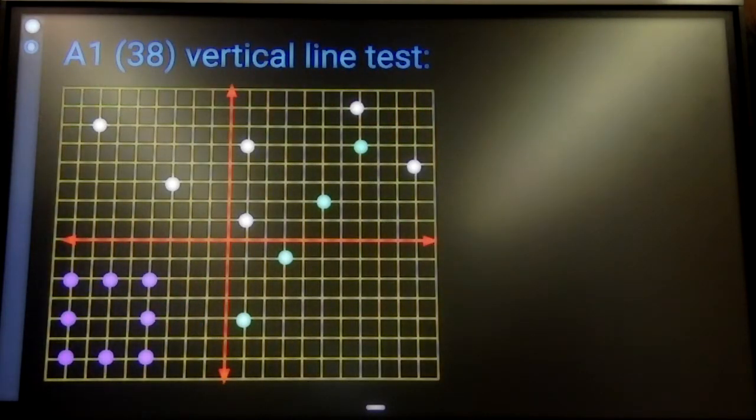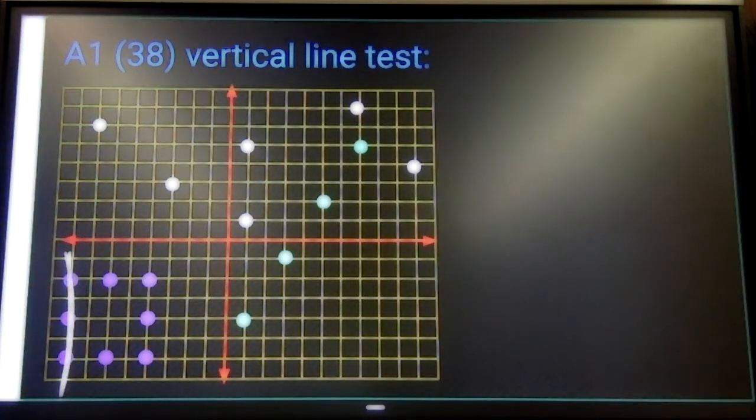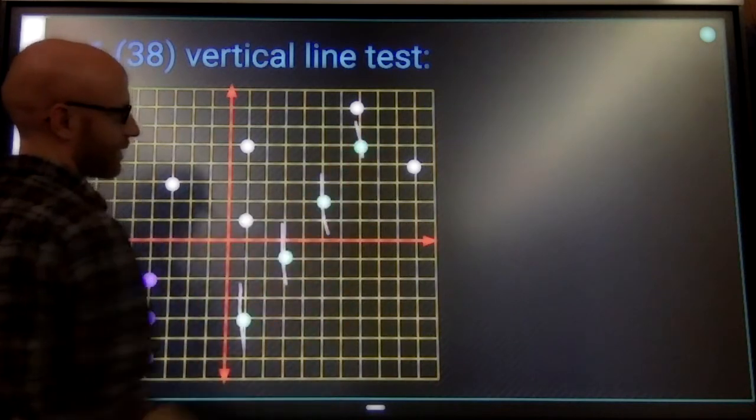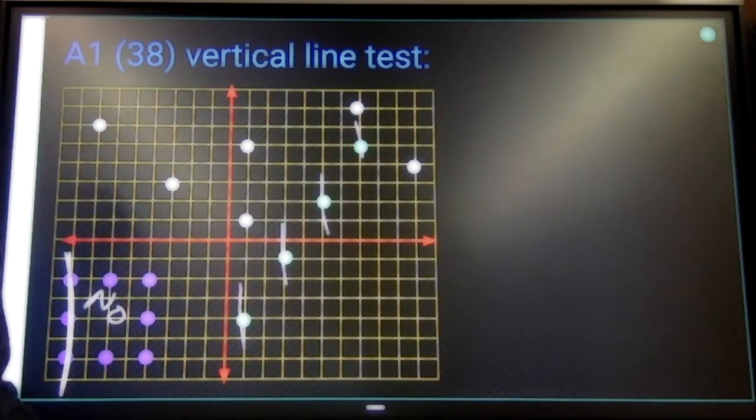We got the white set of points, green set of points, purple set of points. Which ones are, which ones aren't functional? Purple, obviously not functional. A vertical line goes through three points. It's not a function. Green obviously is functional. Every time I draw a vertical line, it only goes through one point.